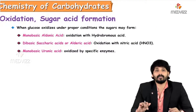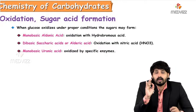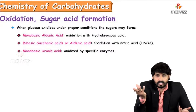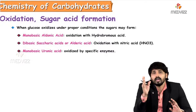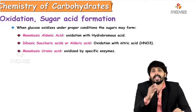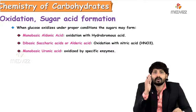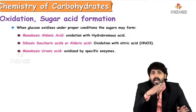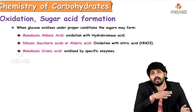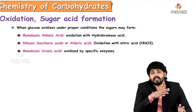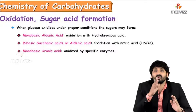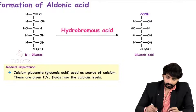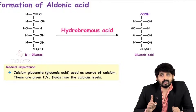Under oxidation, or sugar acid formation: when glucose is oxidized under proper conditions, it forms three types of acids — aldonic acid, aldaric acid, and uronic acid — depending on which carbon is involved. If the first carbon is involved, it forms aldonic acid. If carbons other than the first are involved, it forms aldaric acid. If the last carbon undergoes oxidation, it forms uronic acid, for example, glucuronic acid.